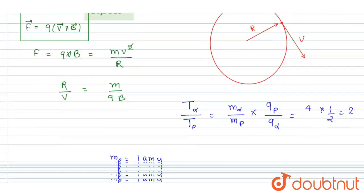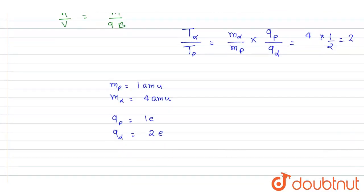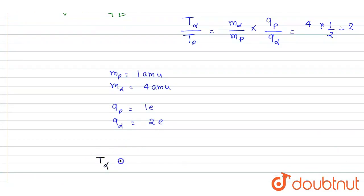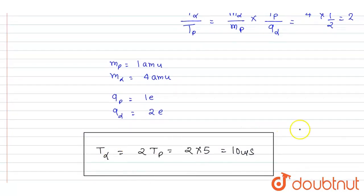Now you can put it in this equation to get the time period for the alpha. Time period for the alpha is 2 times the time period of the proton, so it is 10 microseconds. And this is the answer to this question.